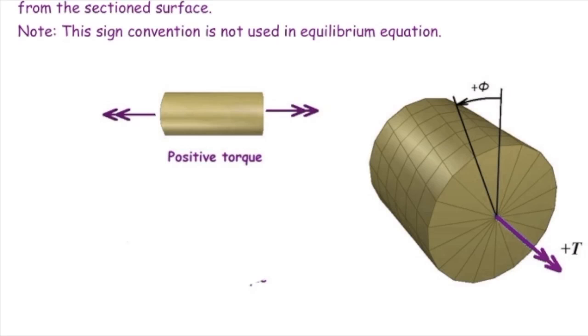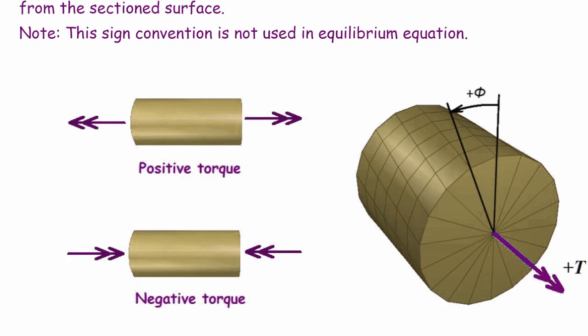For instance, look at this figure. In this case, the torques are both outward from the surface, so we consider them as positive. Now look at the bottom figure. In this figure, both torques are inward to the cut section, and they are both negative.